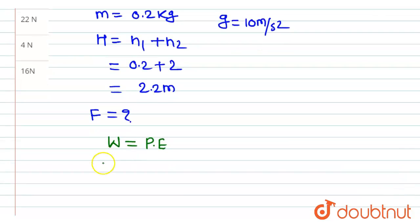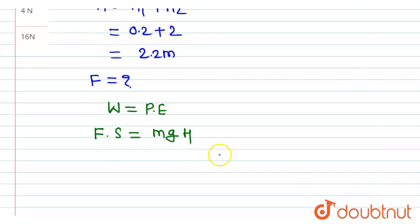So here the value of work done is force into displacement, which equals the value of potential energy mgh. And here we have to determine the value of the force, therefore force will be equal to mgh divided by displacement s.